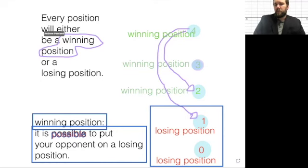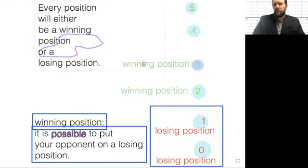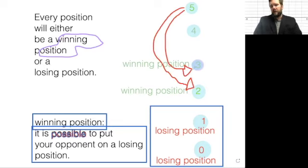A good example of this would be five. If I look at this five position, there are five things on the board. What are my options when I start with five? Well, I can either take two and put my opponent on three, or I can take three and put my opponent on two. But either way, they're going to win from there. So five is a losing position.